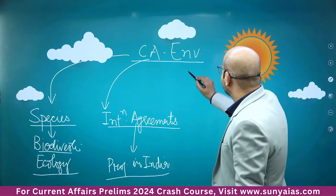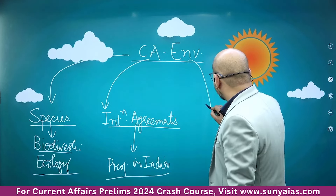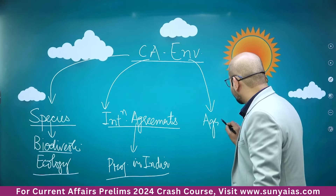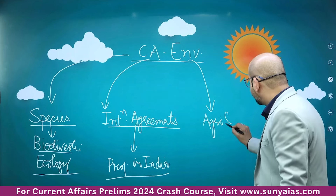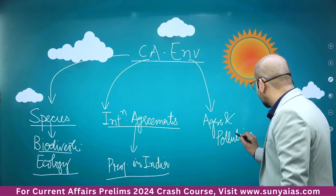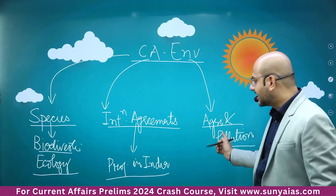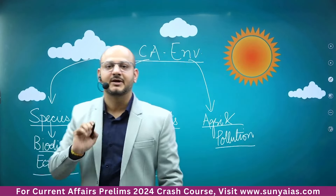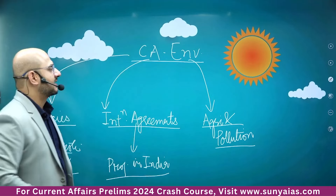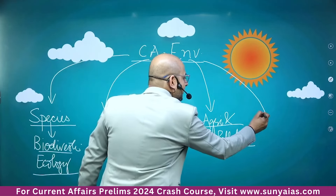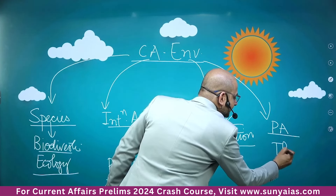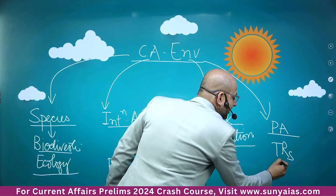You must relate the third classification: climate-smart agriculture, environmental pollution, and what steps have been taken internationally as well as by the Government of India. This is how you should be classifying current affairs for Environment. The third category covers protected areas such as tiger reserves, national parks, and wildlife sanctuaries.